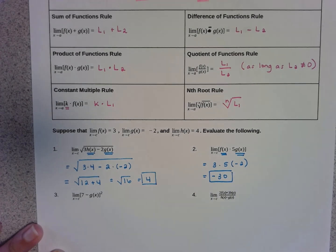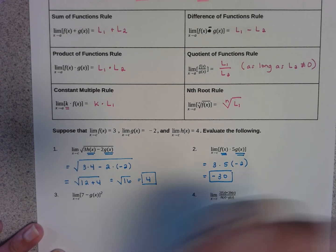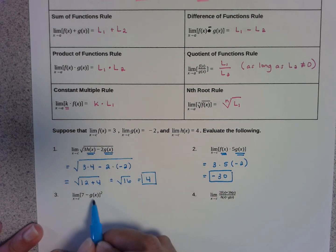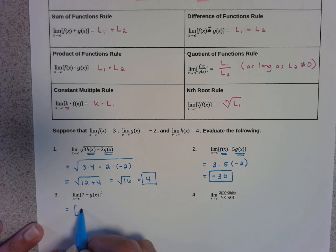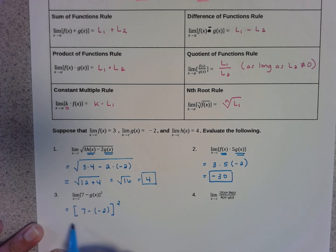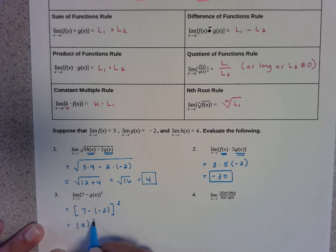For problem number 3, I'm again just going to substitute negative 2, which is the g(x) limit, into the expression, which means I'm going to have 7 minus negative 2, squared. 7 minus negative 2 is 9, so I would have 9 squared, which is 81.